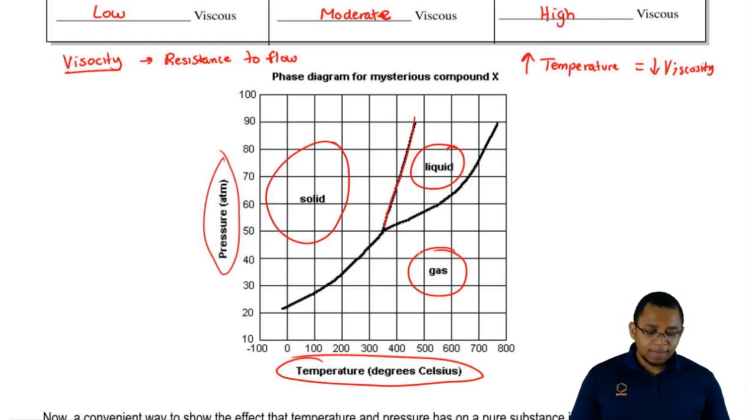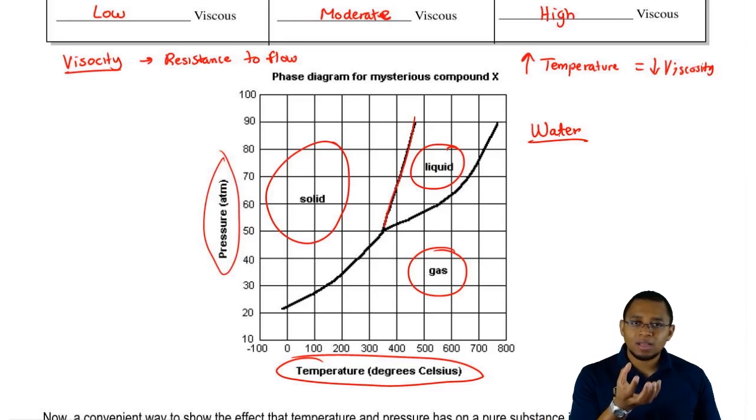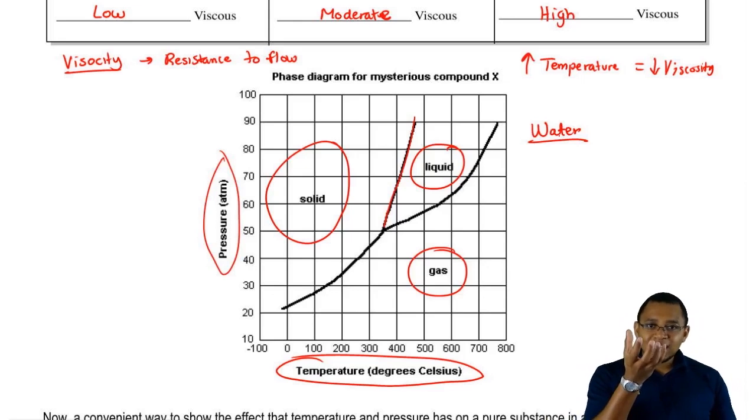This phase diagram represents a compound, and the only compound that it doesn't represent is water. Water is a very unique substance. If you think about it, if you freeze water it becomes ice. Let's say you take that ice cube and dunk it into a cup of water. What usually happens is the ice cube actually floats on top of the water. This means that the solid is actually less dense than the liquid. The solid ice weighs less. That's why it's able to float on the surface of the liquid. This is a weird phenomenon that happens only with water.